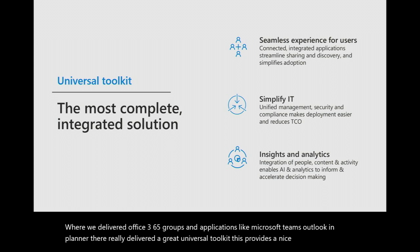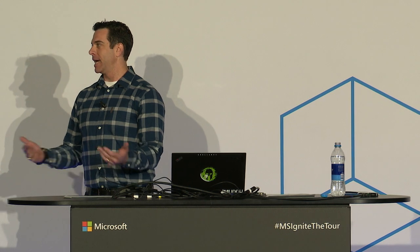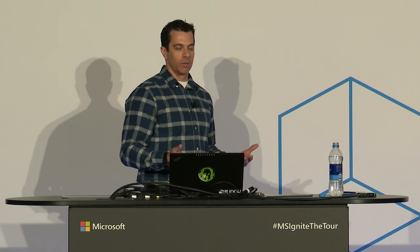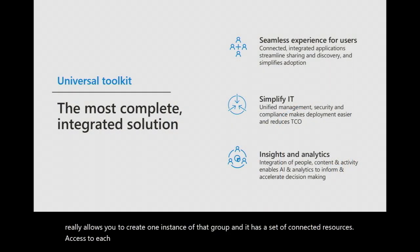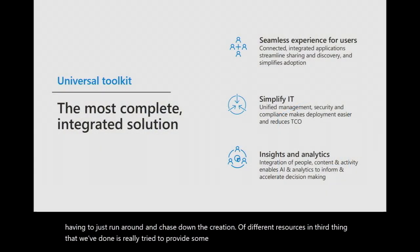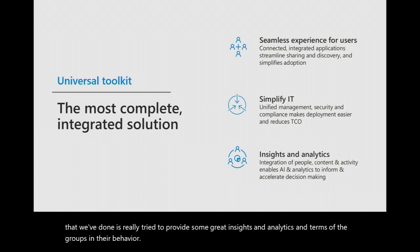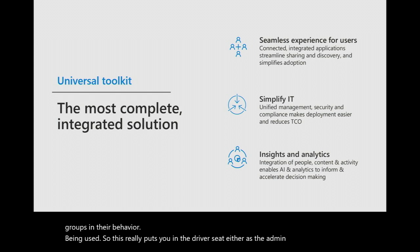Here's where we delivered Office 365 Groups and applications like Microsoft Teams, Outlook, and Planner that deliver a great universal toolkit. This provides a seamless experience for end-users as they transition across the suite. In the old days, you'd create a distribution list — a request to IT — and then a separate request to provision a SharePoint site with almost the same people. Office 365 Groups lets you create one instance with a set of connected resources, simplifying IT's workload while providing great insights and analytics on how groups are being used.